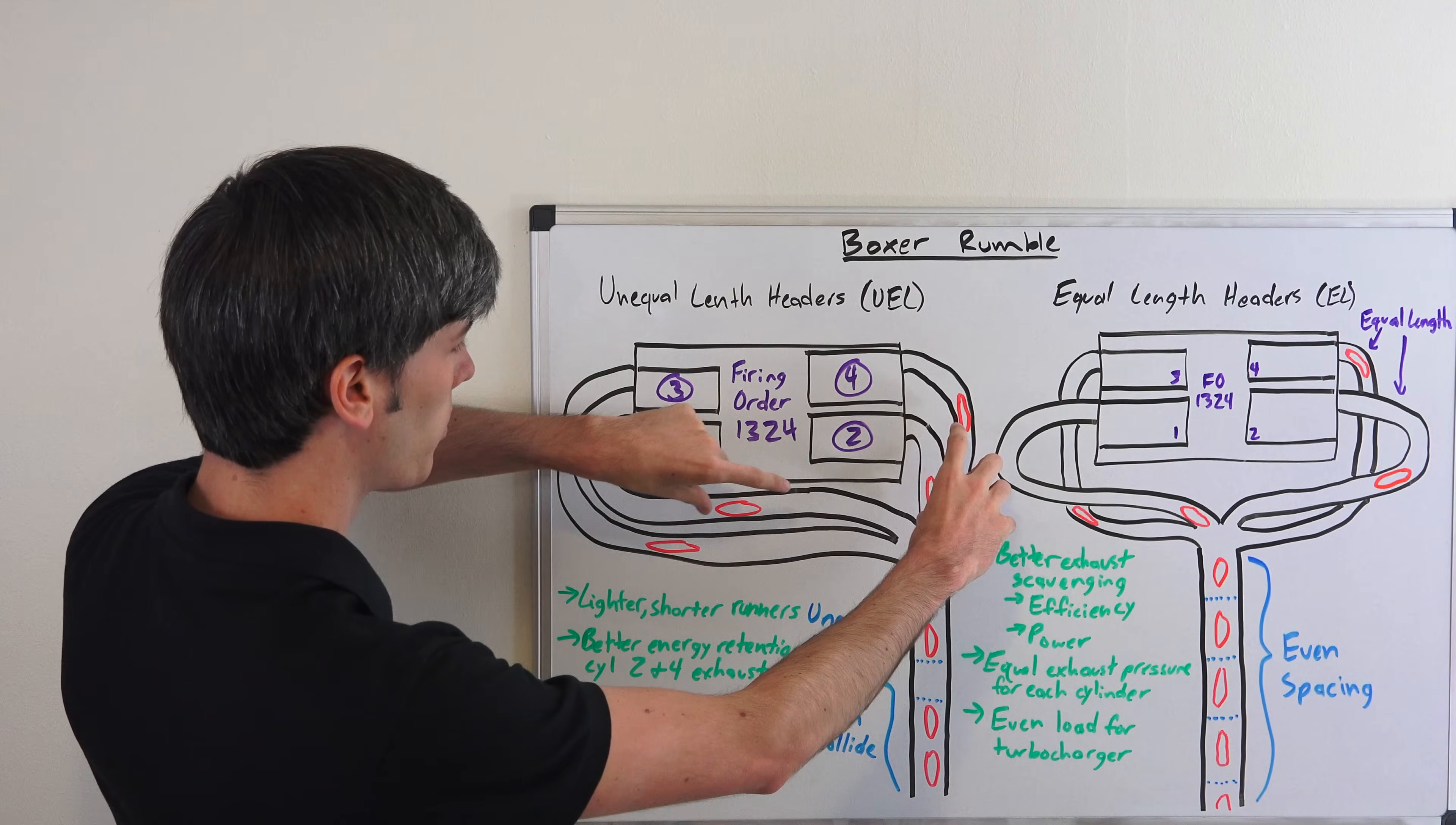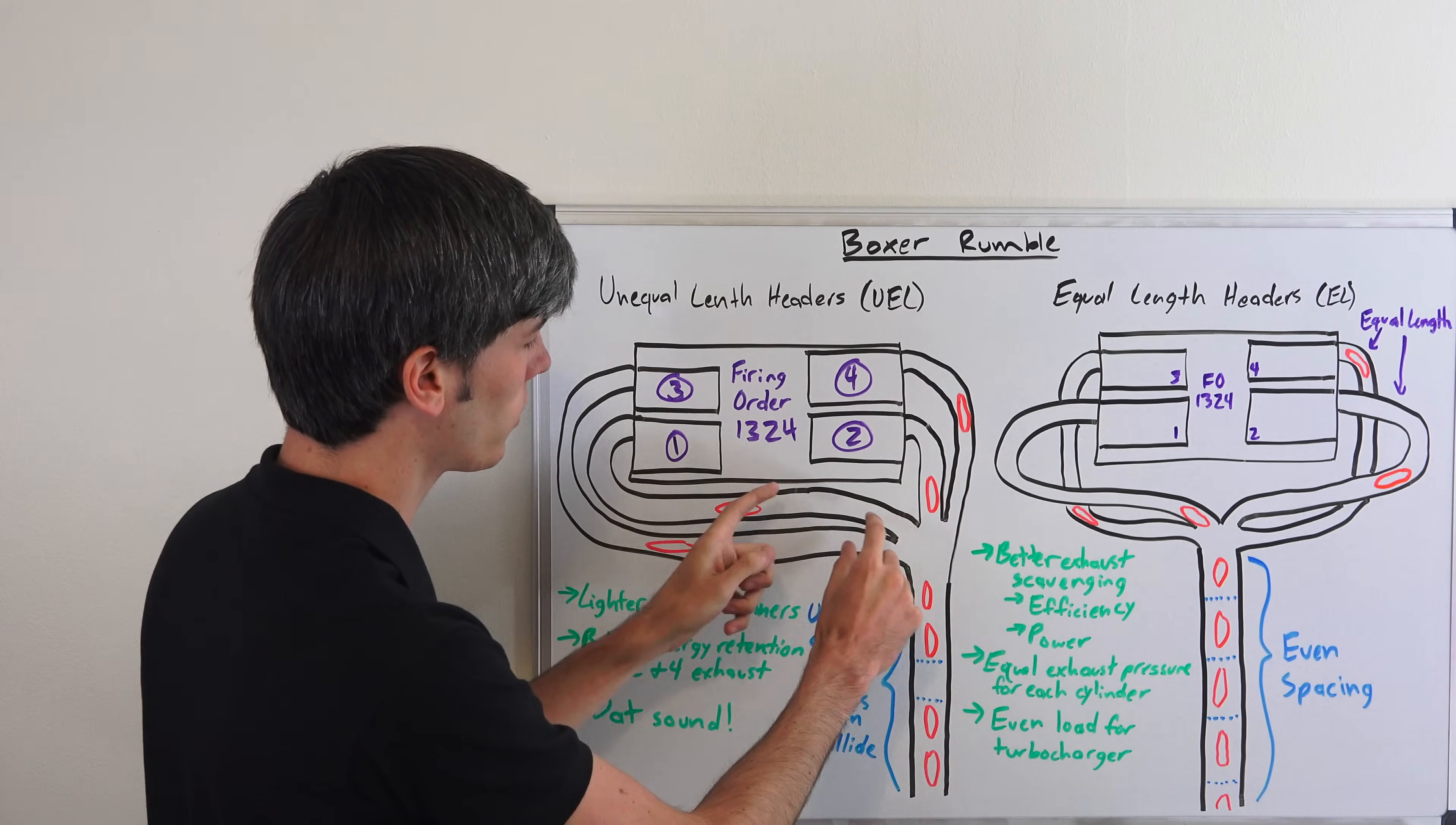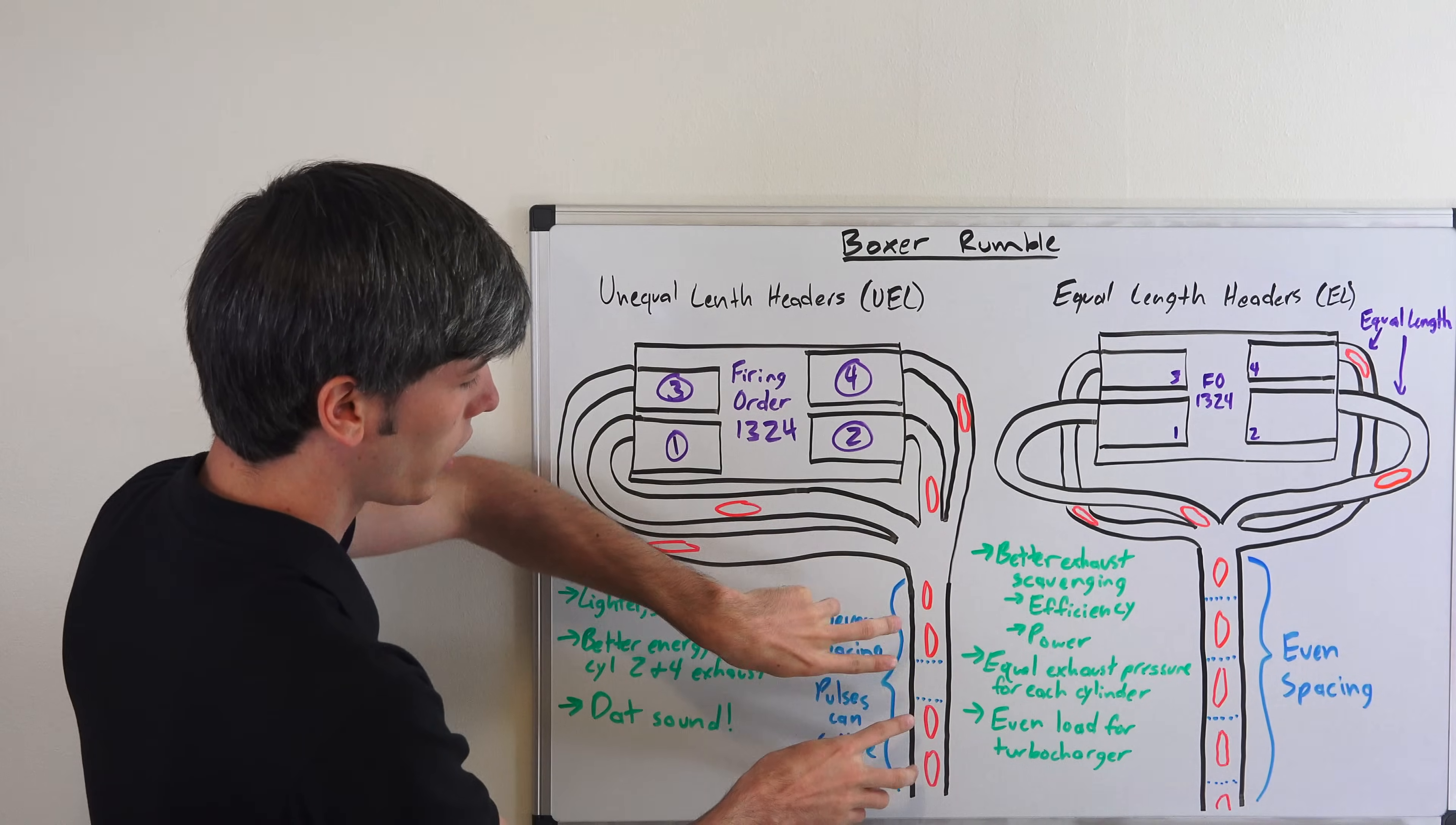There's going to be an uneven spacing of these because these pulses have to travel a longer distance before getting to the pipe towards the exit versus these pipes right here as they travel.